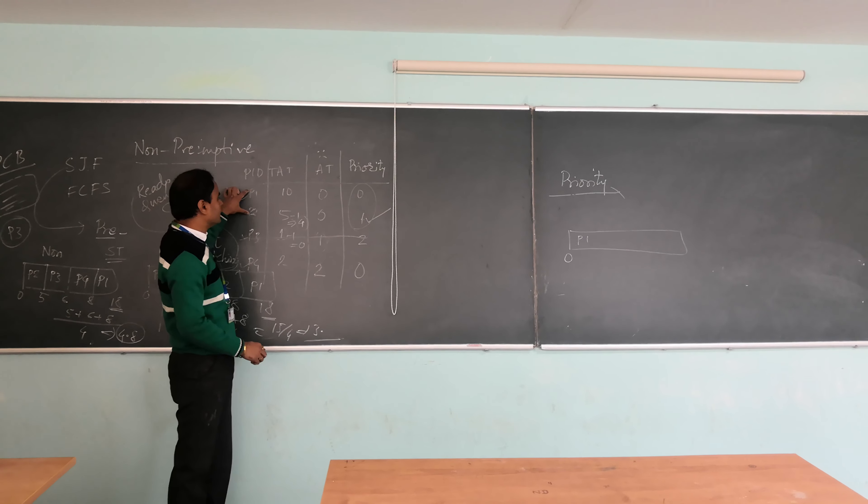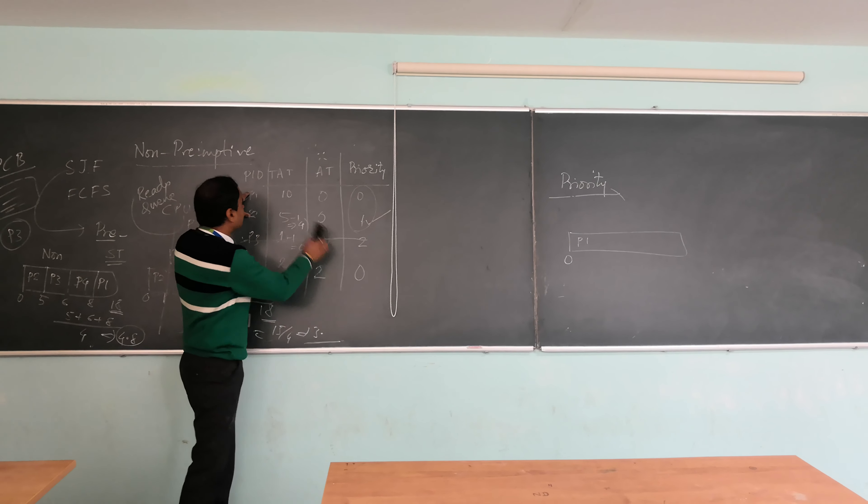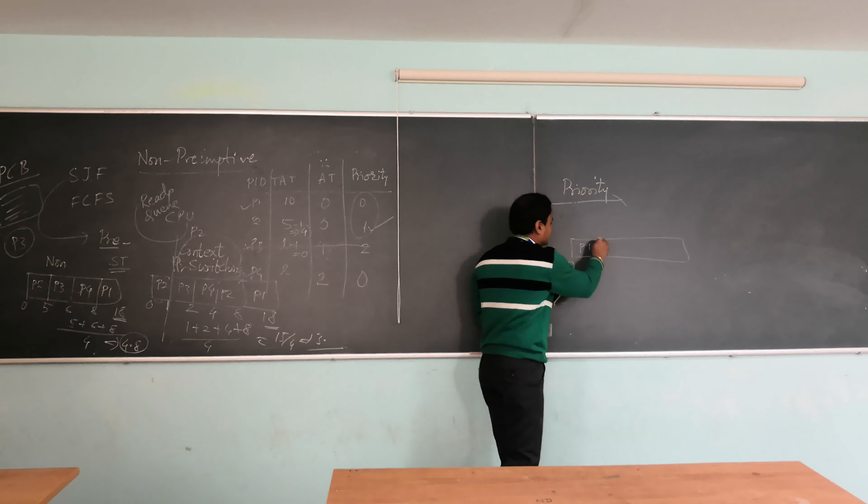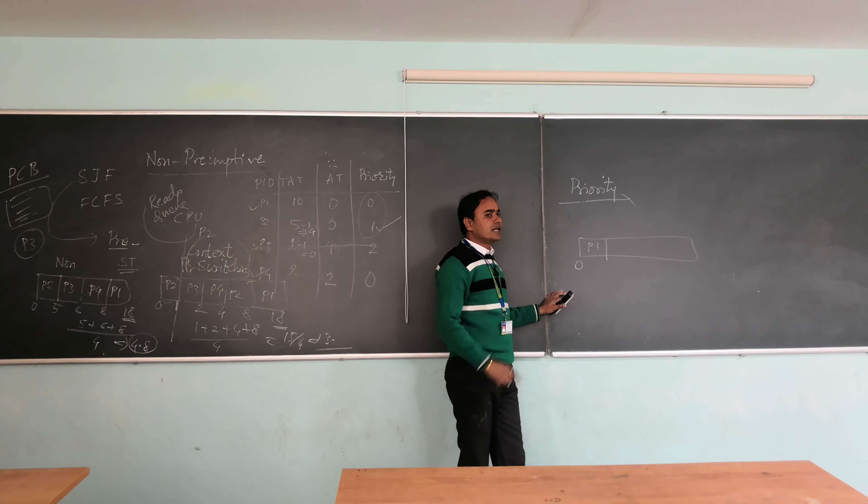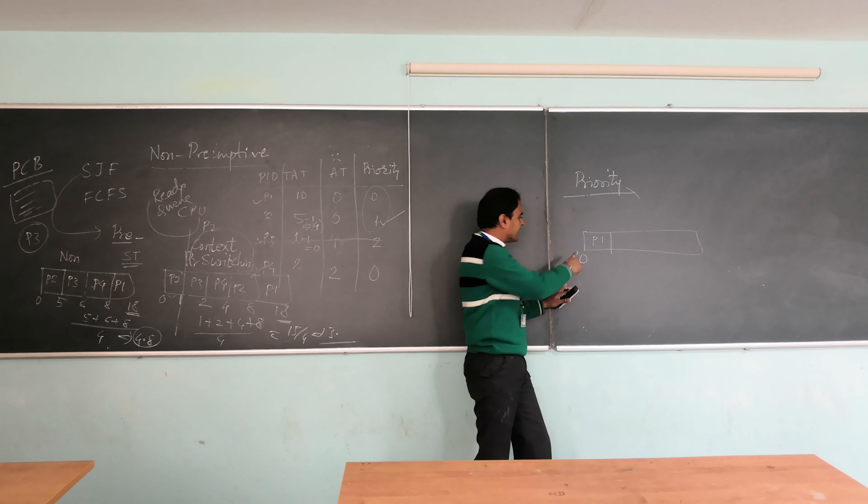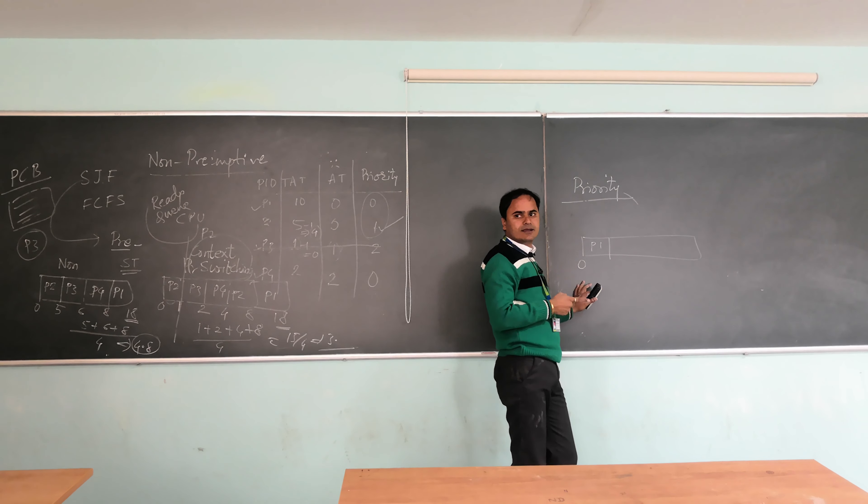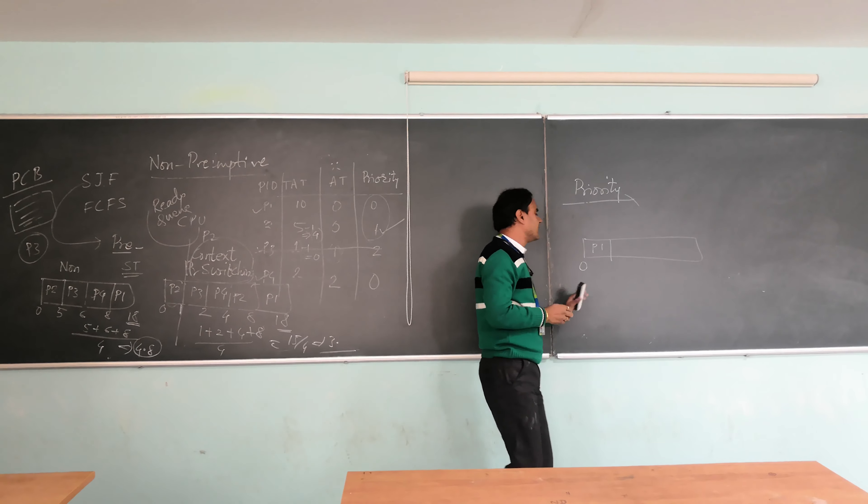You have only P1 and P2. Whose priority is lower? Priority of P1 is lower, that is 0, and that is the reason you started execution with P1. But in case of non-preemptive, you were directly executing completely. P1 were completely executed, but here that will not be the case.